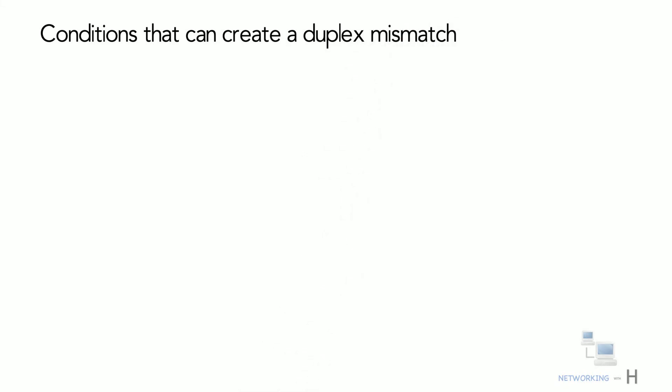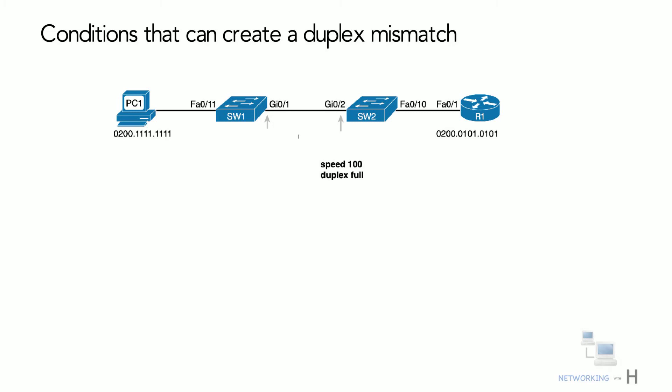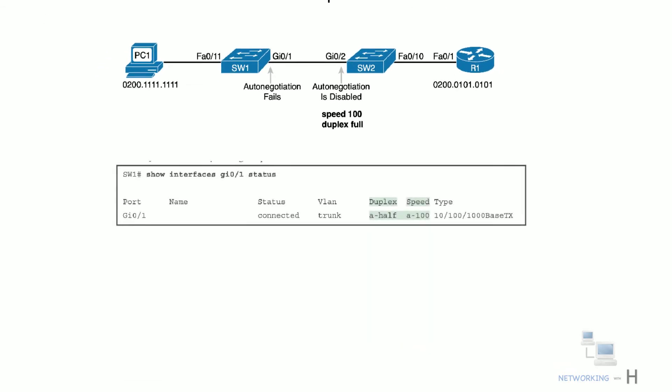Next, let's look at conditions that create a duplex mismatch. For example, if Switch 2's gi0/2 interface is configured with 'speed 100' and 'duplex full', on Cisco switches configuring both speed and duplex disables IEEE auto-negotiation on that port. If Switch 1's gi0/1 interface tries to use auto-negotiation, it would also use 100 Mbps but default to half duplex, confirming a duplex mismatch on Switch 1. Show interface gig0/1 status shows the result.